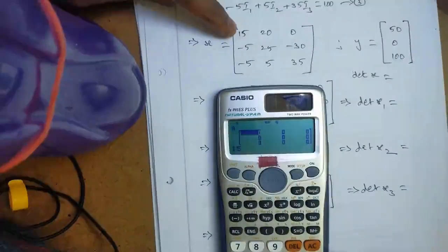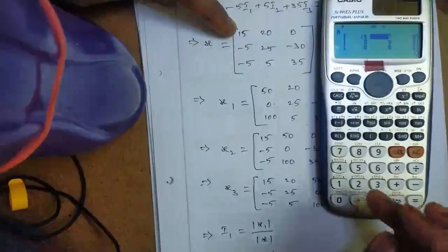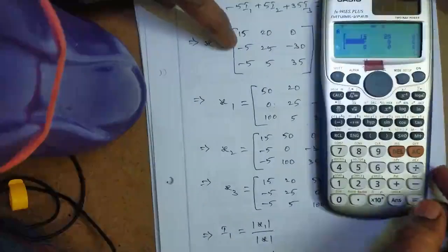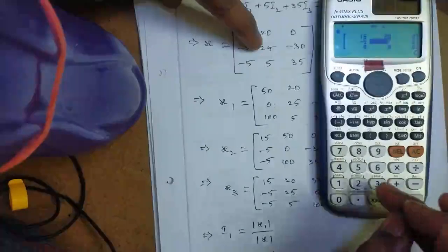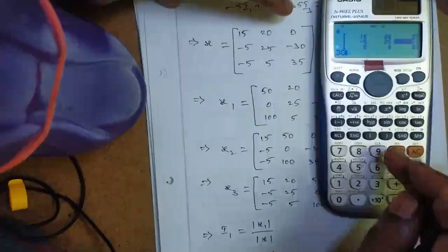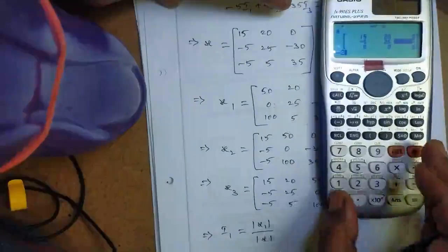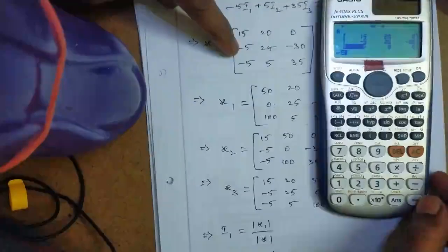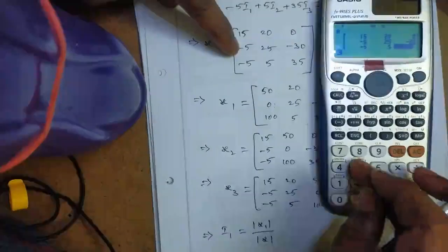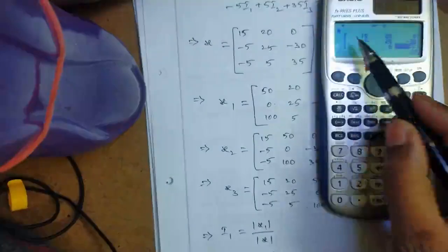Entering matrix X values: 15, enter; 20, enter; 0, enter; minus 5, enter; 25, enter; minus 30, enter; minus 5, enter; 5, enter; 35, enter. Matrix X is now entered in matrix A of the calculator.